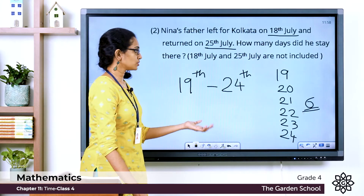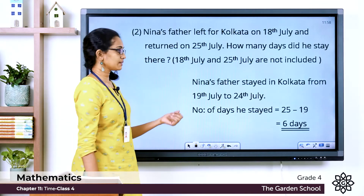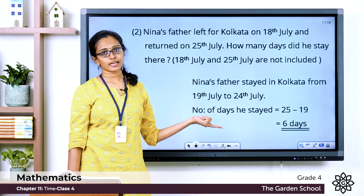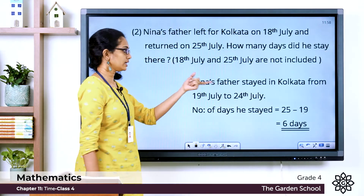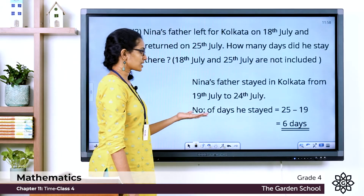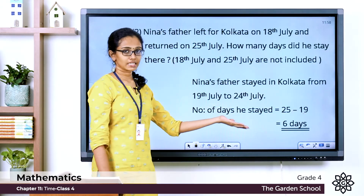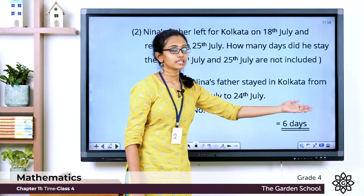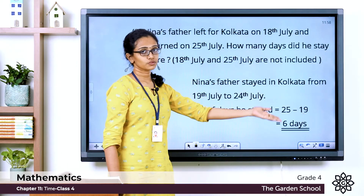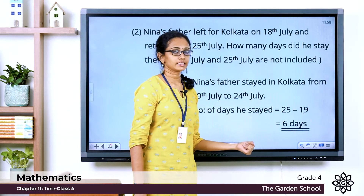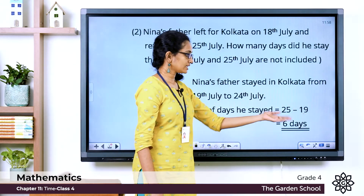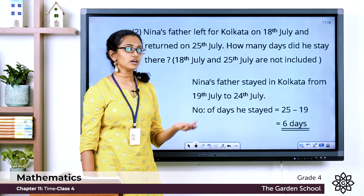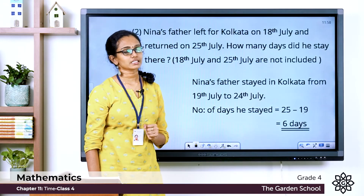You can also calculate it like this — see the steps. Nina's father stayed from the 19th of July to the 24th of July. The number of days he stayed is equal to 25 minus 19, which is 6 days. He stayed in Kolkata for six days.